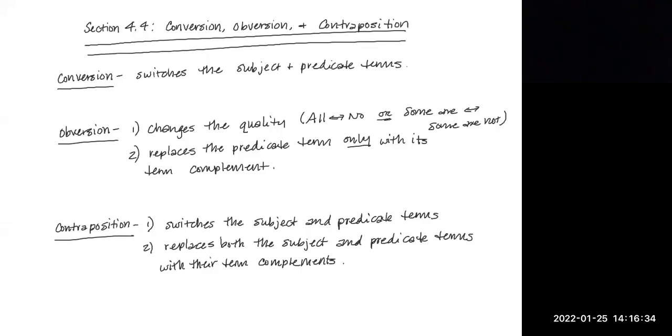The second set of tools in your toolbox when you're working proofs, besides the traditional square of opposition, is conversion, obversion, and contraposition.